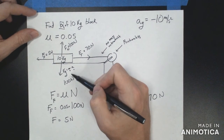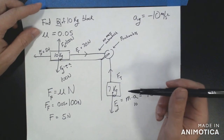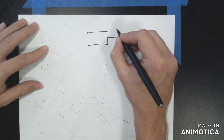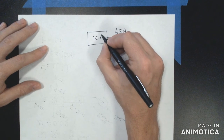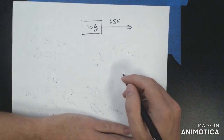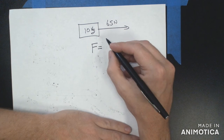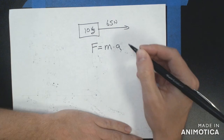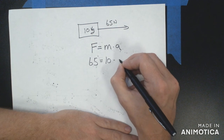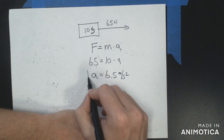The 100 newtons up and 100 newtons down cancel. That leaves 70 newtons to the right and 5 newtons to the left, giving a net force of 65 newtons to the right. Applying Newton's second law: 65 newtons equals 10 kilograms times A, so the acceleration of the 10 kilogram block is 6.5 meters per second squared.